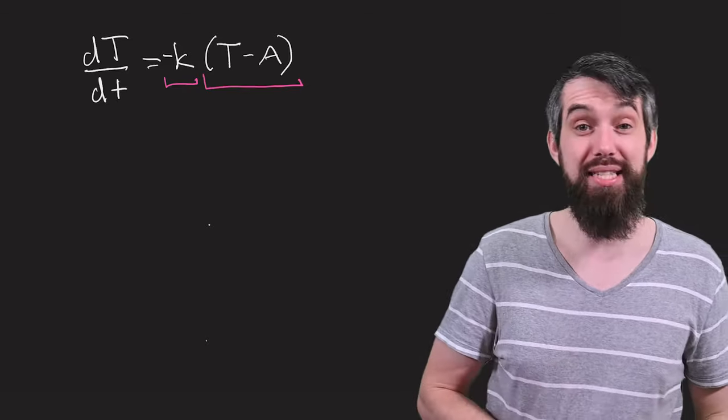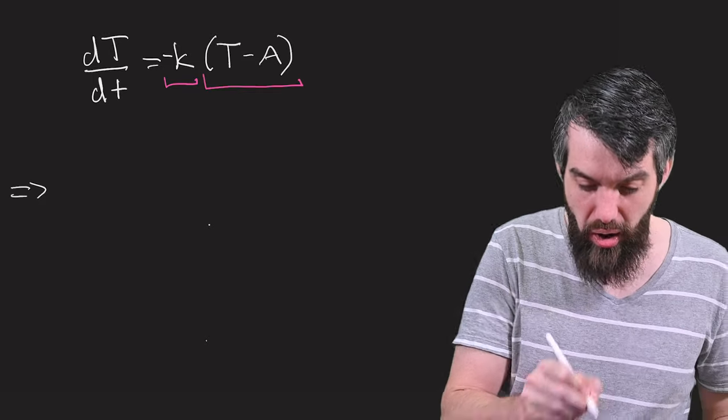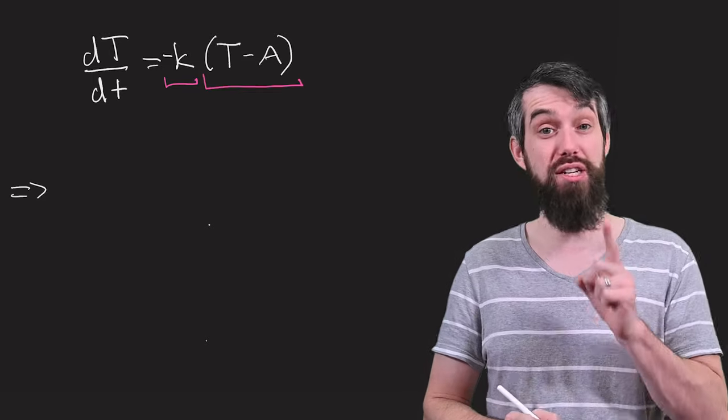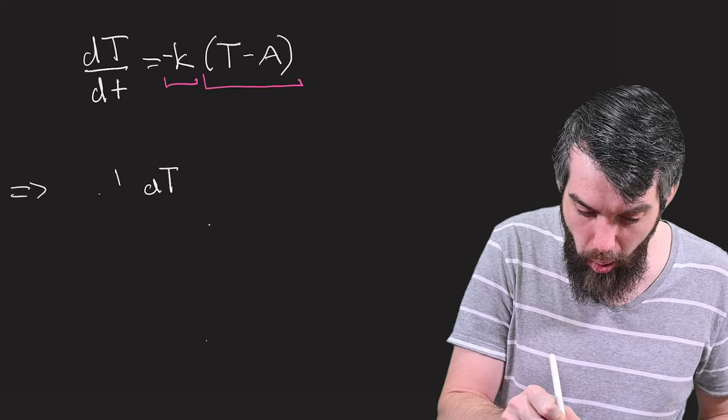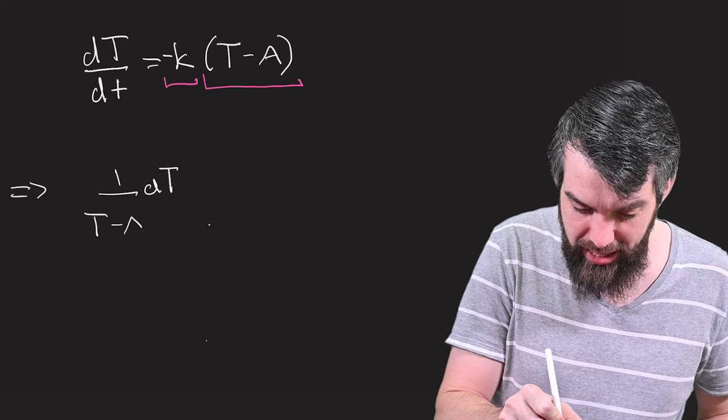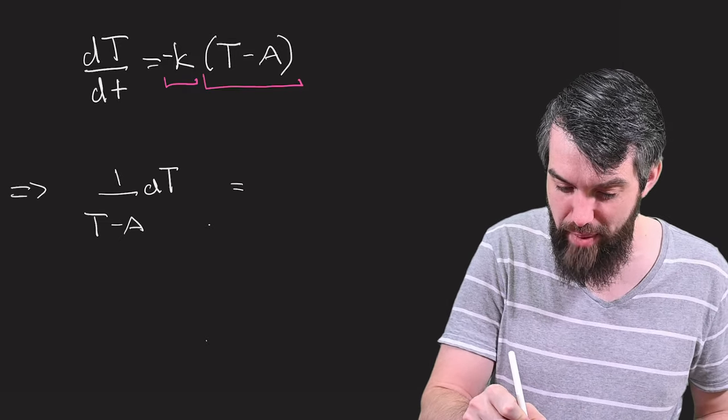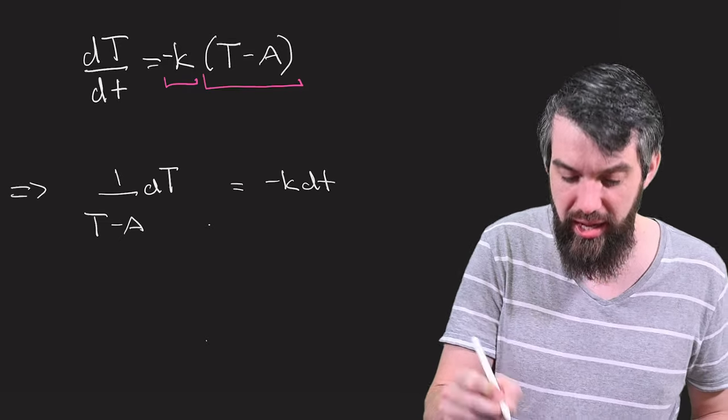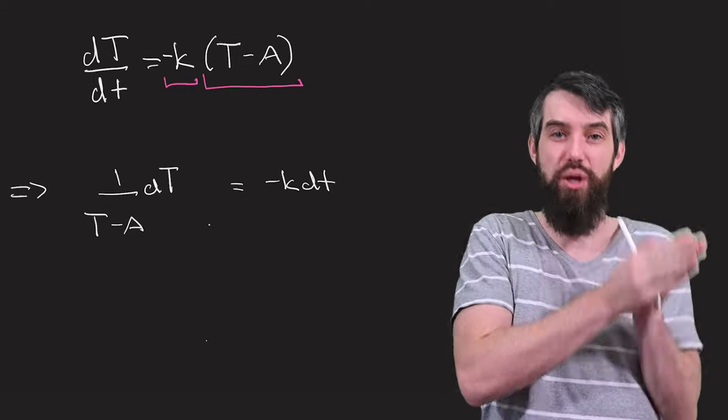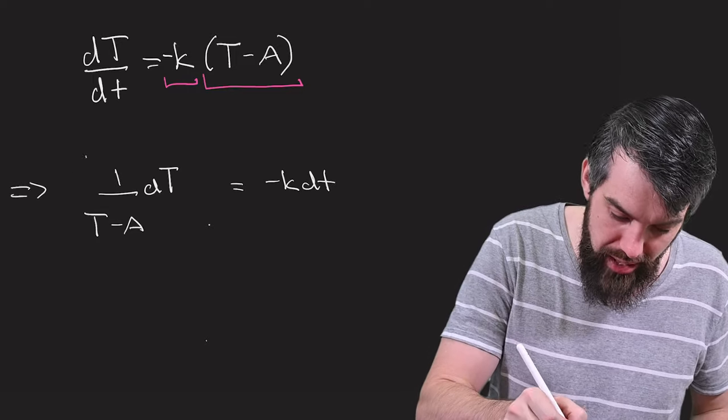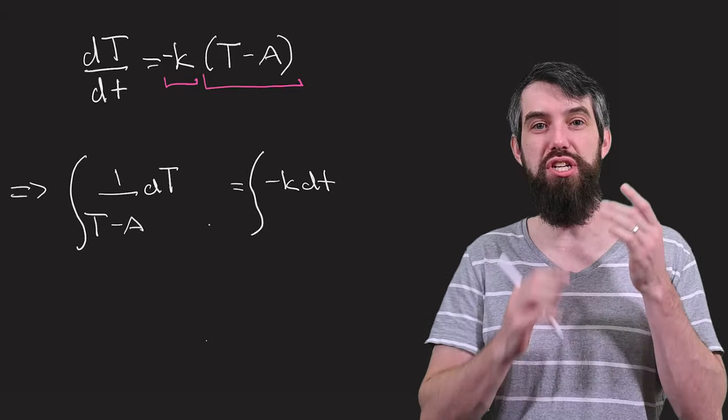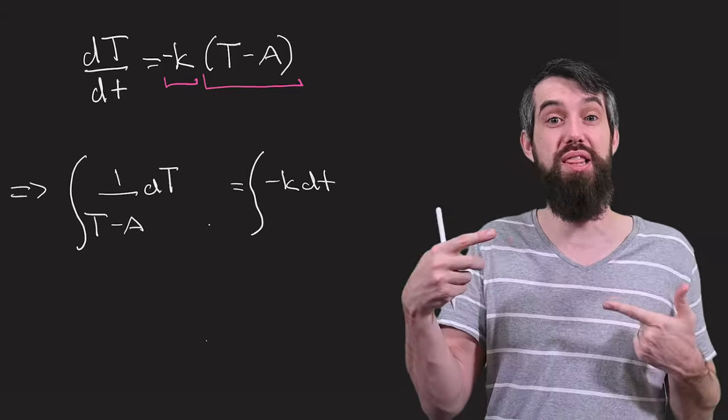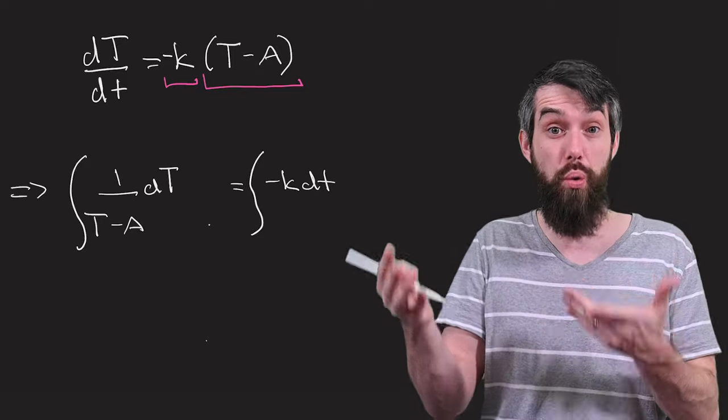And so what I do is I separate my variables. On the left-hand side, I'll write everything to do with the temperature. So that had a dT. And then I'll also have the 1 over T minus A. And on the right-hand side, I'm going to have my minus K and my dt. So I've completely separated the lowercase t and the uppercase T. And then I'm going to do an integral on both sides. And the details of this methodology of separation of variables we've covered in the previous video in this course.